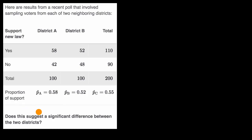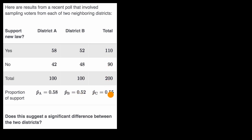We're now going to explore hypothesis testing when thinking about the difference between proportions of two different populations. Here are the results from a recent poll that involved sampling voters from each of two neighboring districts, District A and District B, where folks were asked whether they support a new law or not. From each district, we took a sample of 100 voters and calculated the proportion from that sample that supported the law, along with the combined data and combined proportion. We're asked: does this suggest a significant difference between the two districts?